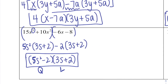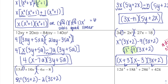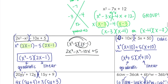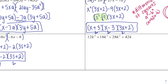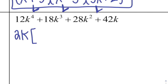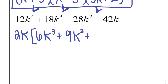Factoring by grouping is almost easier because you don't have to set up the X anymore — they already give you 4 terms and you just group it up. Looking at this next one: I have k to the 4th, k cubed, k squared, k — I could take out a k, but all the numbers are even, so I'm going to take out 2k. That leaves me with 6k³ + 9k² + 14k + 21.